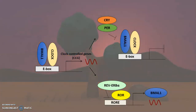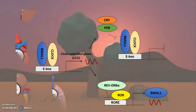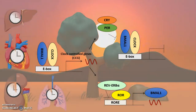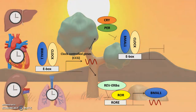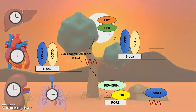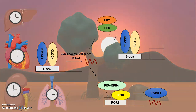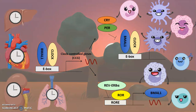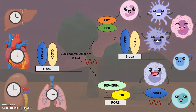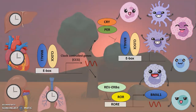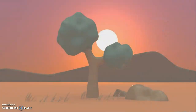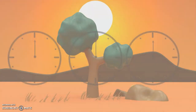The master clock of the SCN synchronizes molecular clocks found within tissues, allowing for coordination of functions over the course of the day. The molecular clock is present in virtually all cell types, including those in the immune system, helping handle microbial threats more efficiently.